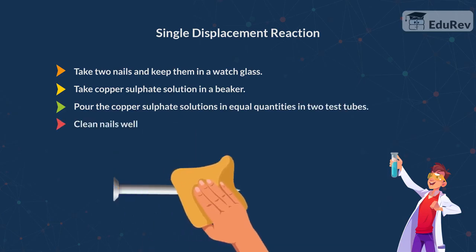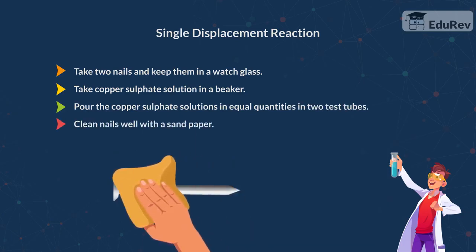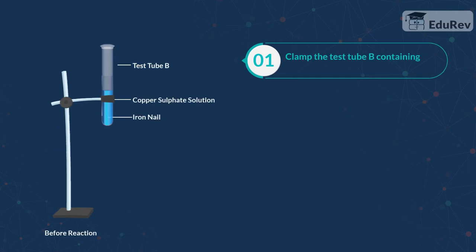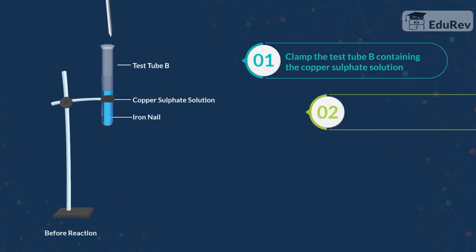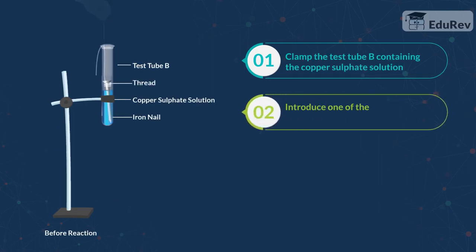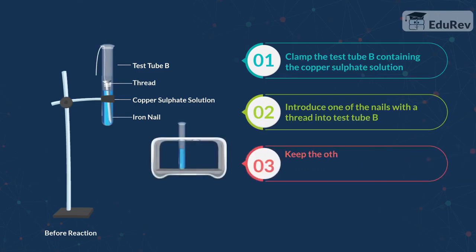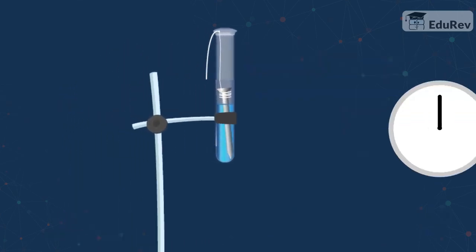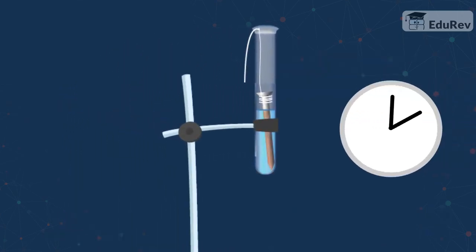Clean the nails well with a sandpaper to remove the surface impurities. Clamp the test tube B containing the copper sulphate solution and introduce one of the nails with a thread into test tube B. The second test tube containing pure copper sulphate solution can be kept in a test tube stand. Keep aside the other nail on a watch glass. Now keep them undisturbed for about 30 minutes.